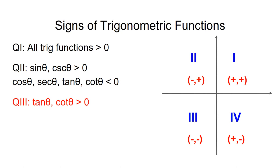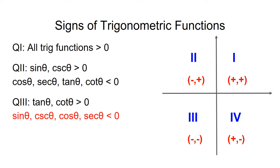In quadrant three, both x and y are negative. Tangent theta equals y over x, so it will be positive, as will cotangent theta. Sine theta equals y, which is negative, and so is cosecant theta, the reciprocal of sine theta. Cosine theta equals x, which is also negative, as is secant theta, its reciprocal.